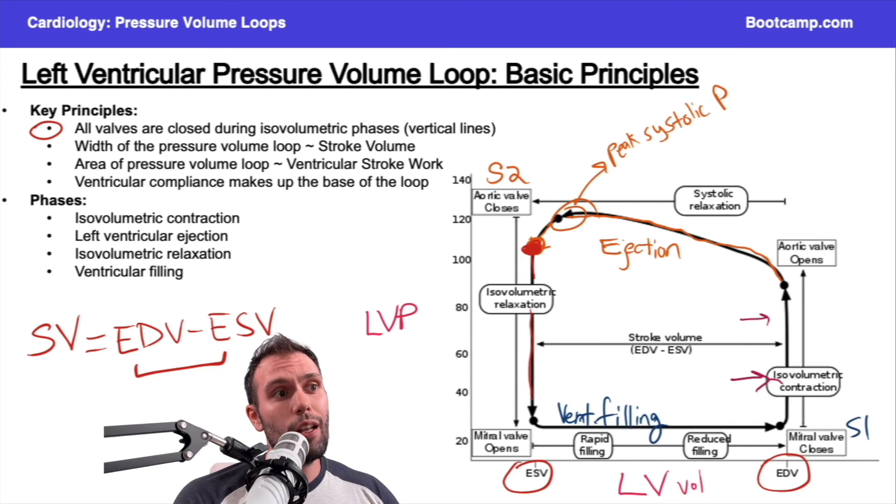The point when the aortic valve closes, that would be the end systolic volume. Can you say that this whole line is the end systolic volume? Yeah, in this particular diagram you could, but if these lines were on an angle from some pathology, you would want to specifically pick the point at which the aortic valve closes as your end systolic volume.